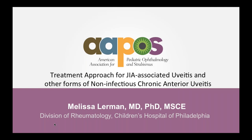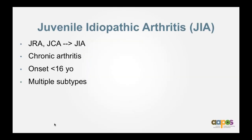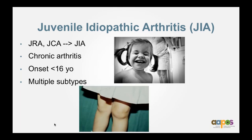As the lone rheumatologist in this group, I'm going to focus on JIA-associated uveitis. Depending on when you trained, you may know this disease as juvenile rheumatoid arthritis or juvenile chronic arthritis. Currently we call it juvenile idiopathic arthritis (JIA), to distinguish it from adult rheumatoid arthritis. This is when a child has chronic arthritis — arthritis for at least six weeks — that develops before age 16. There are many different phenotype subtypes of JIA.